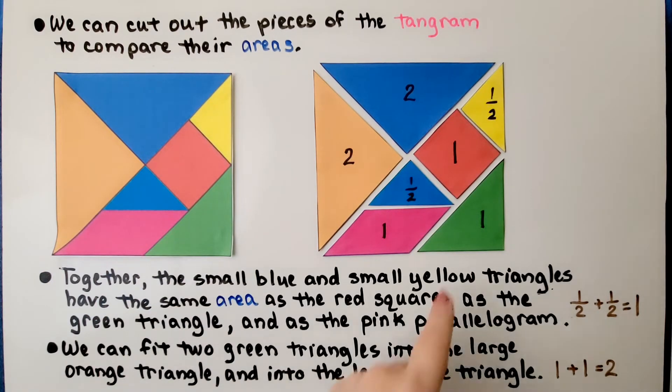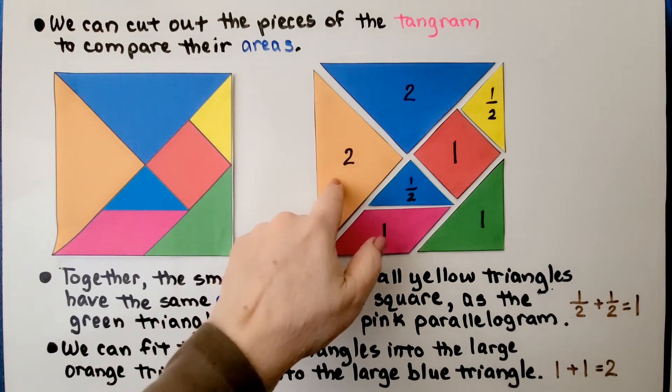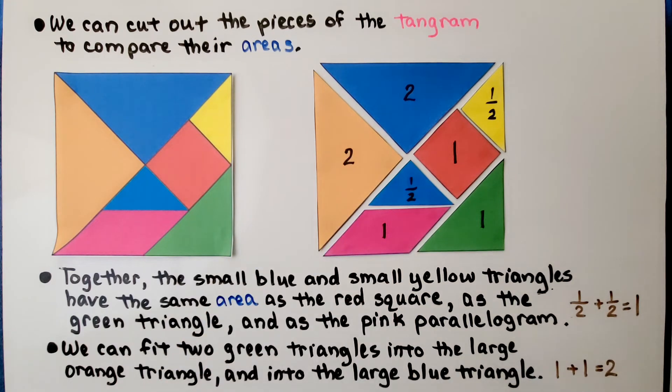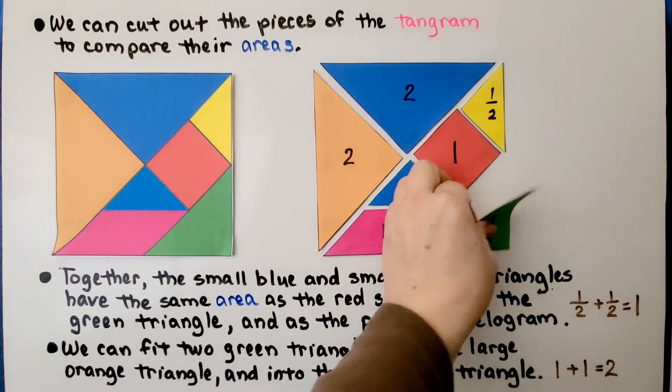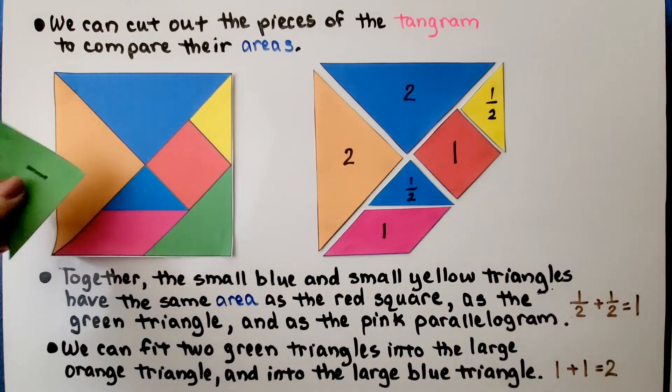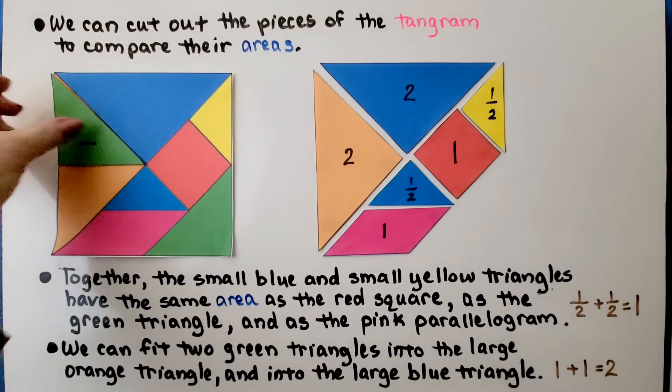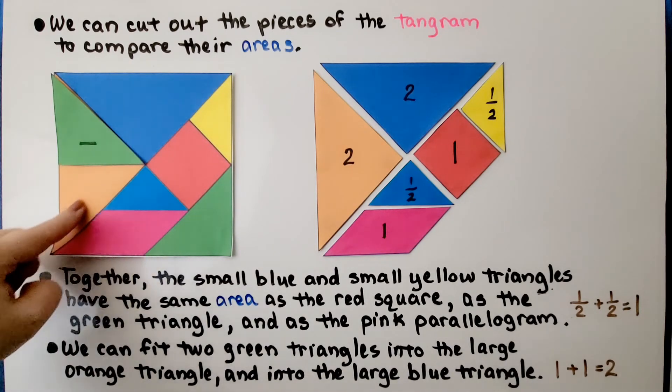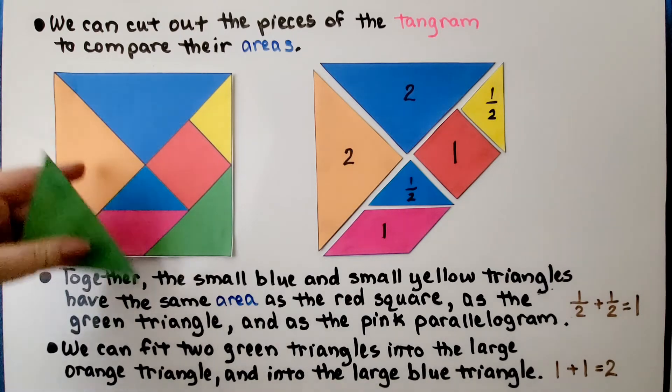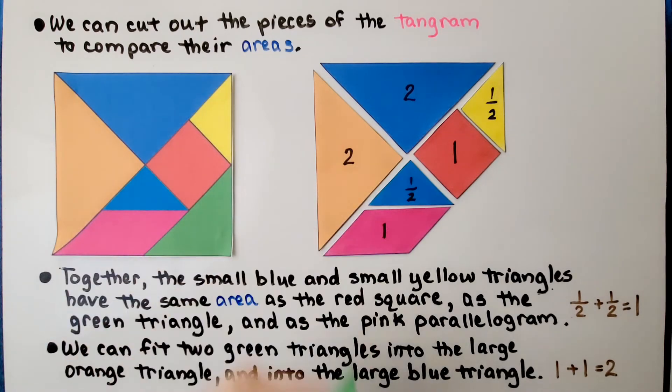We could take two of these green triangles and fit them into this orange triangle and into the large blue triangle. If I had two of these, I would be able to fit them into here. We have one here, and you can see we could fit another one here. That's why the orange triangle is two units.